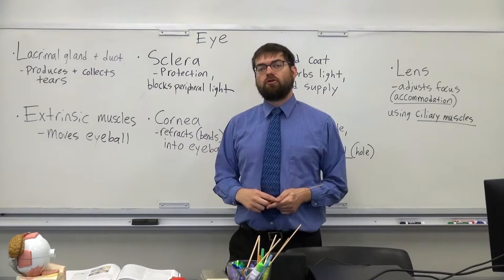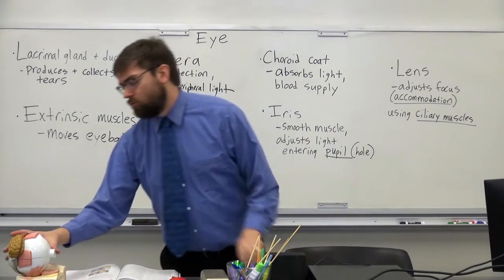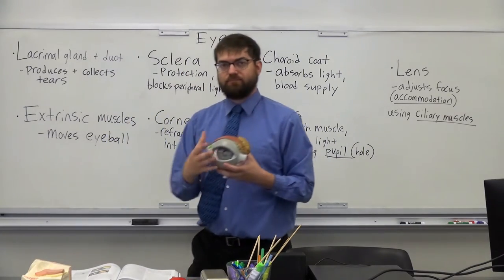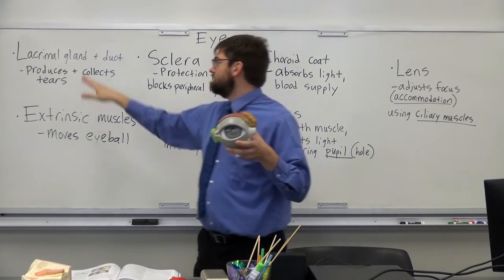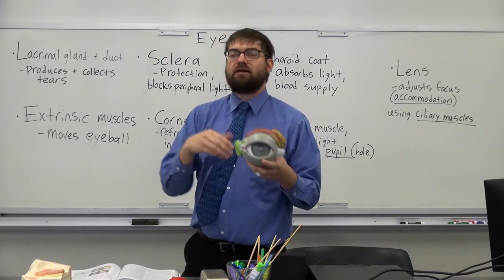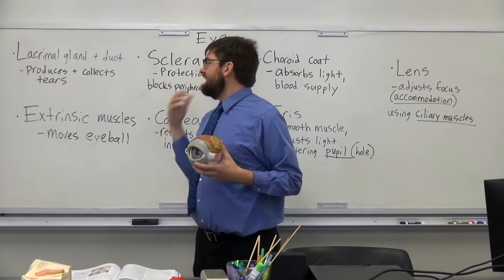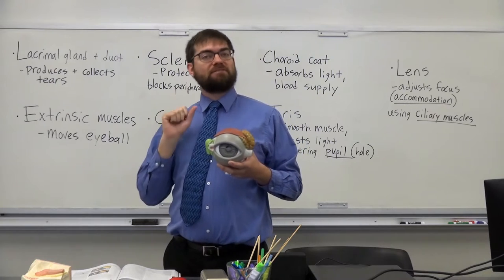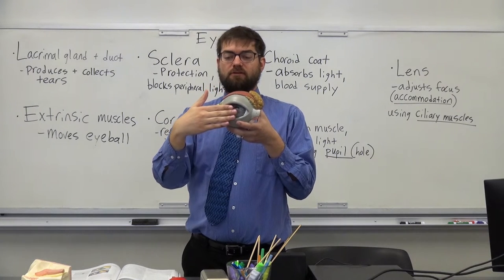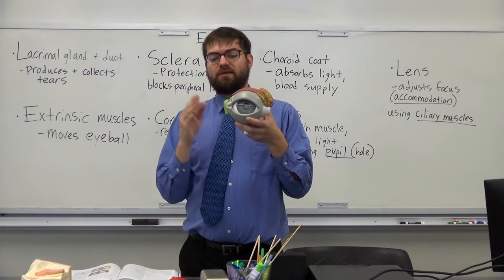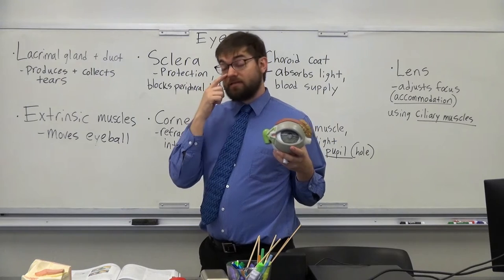We're going to learn about the basic parts of the eye, starting from the outside and working our way inside. The first part is this big structure here — the lacrimal gland — and this part is called the lacrimal duct. 'Lacrimal' comes from the word lacrimose, meaning sad, so this is about tears. The lacrimal gland makes the tears, which sweep across the front of the eye and are then picked up by the lacrimal duct, which drains into the nasal cavity.